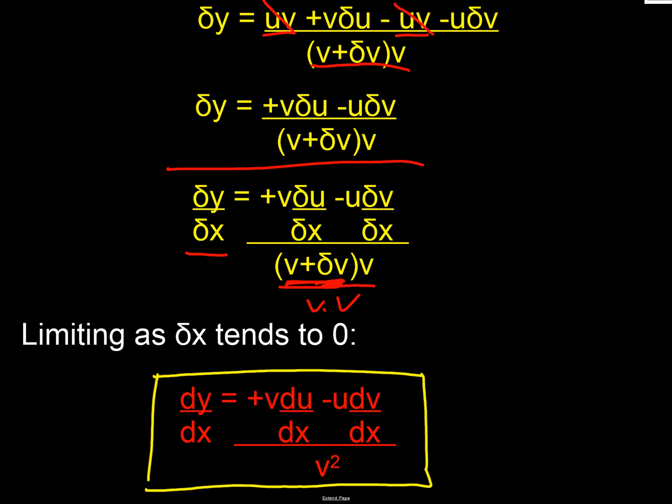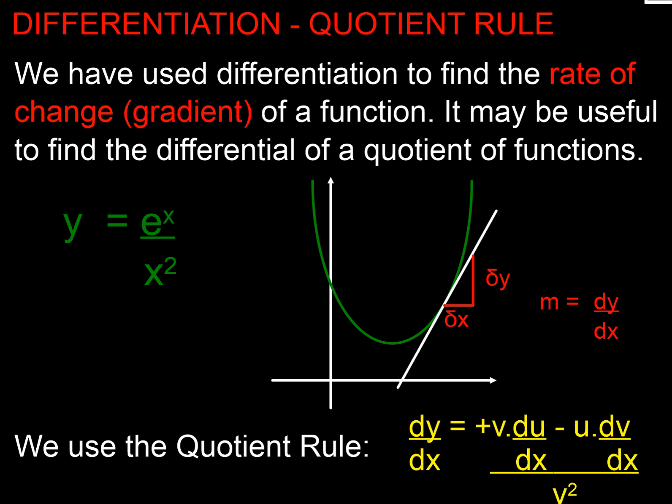Therefore, our equation for finding dy/dx is: dy/dx equals v·du/dx minus u·dv/dx, all over v². Remember that we need to be clear about the signs and get the right way around. u is the function on top and v is the function underneath. We subtract u·dv/dx and then divide the whole lot by v².